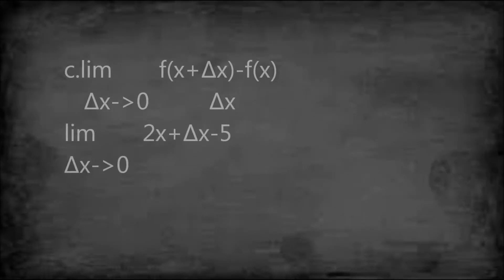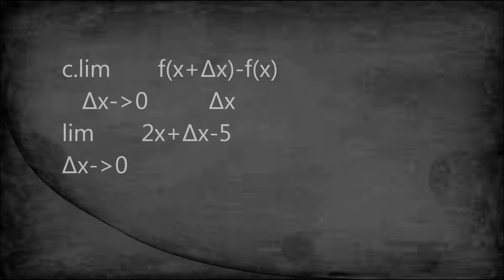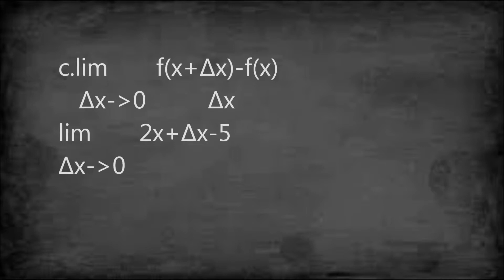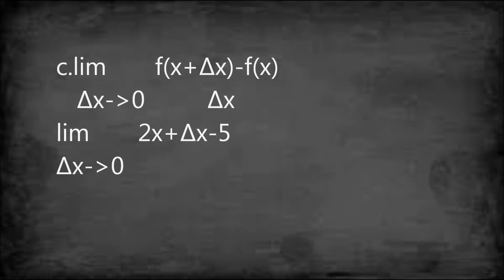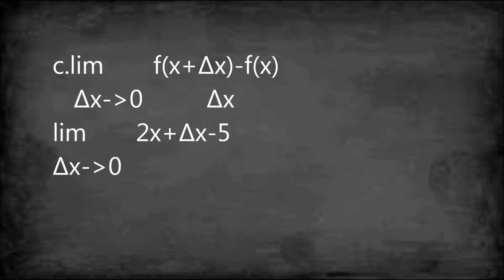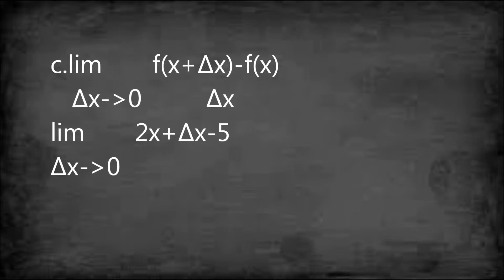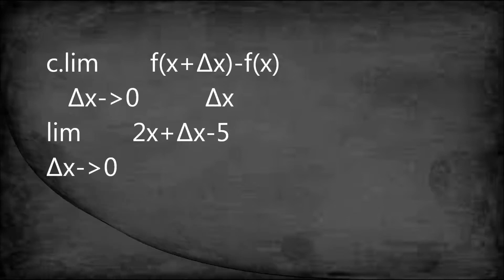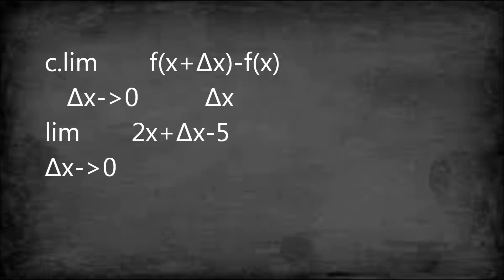And lastly, the limit of f of x plus delta x minus f of x over delta x as delta x approaches zero. This is our formula in letter c. We're gonna substitute the answer from letter b in the numerator. So the result will be the limit of 2x plus delta x minus 5 as delta x approaches zero.